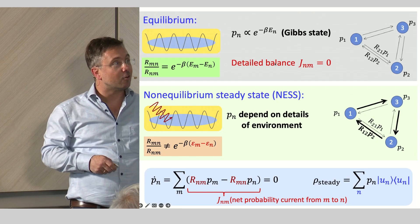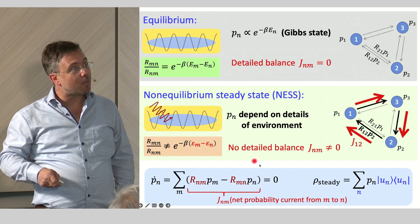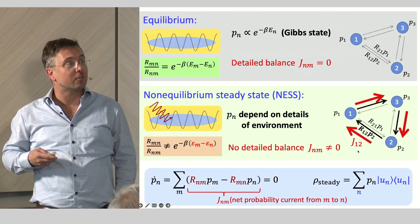Now, if we go away from equilibrium, this is not the case anymore. These probability distributions depend on all the details of these rates, not just on the temperature. And you have a finite probability flux in the steady state. This is why it's not an equilibrium state anymore, but a non-equilibrium steady state.